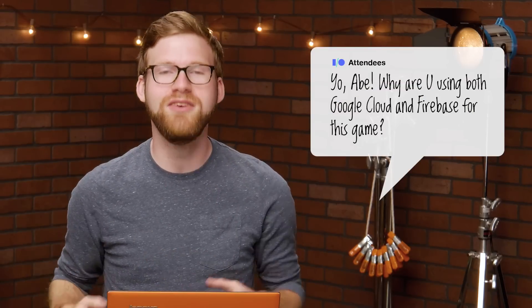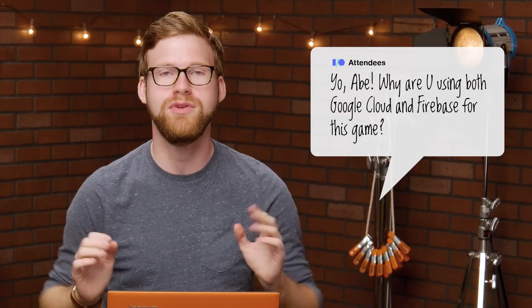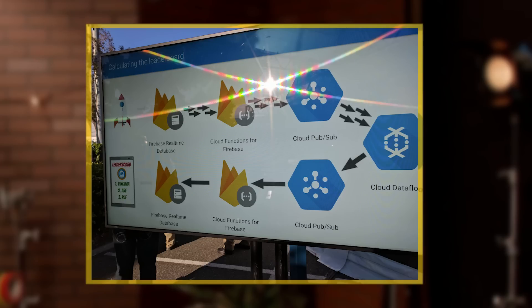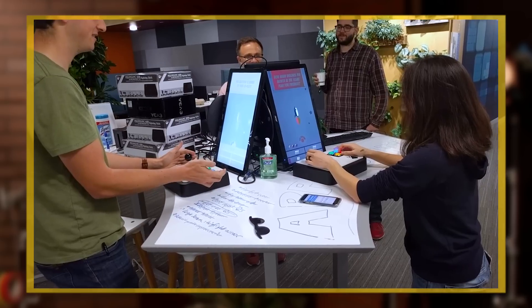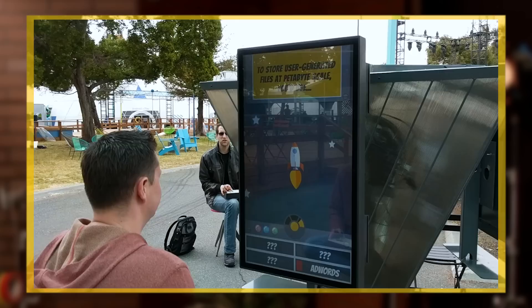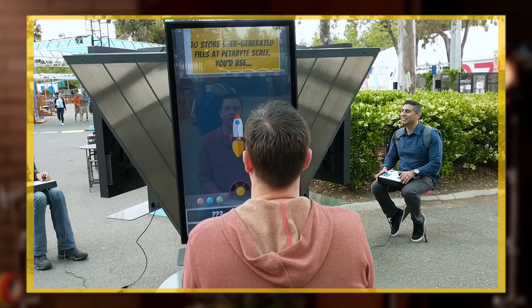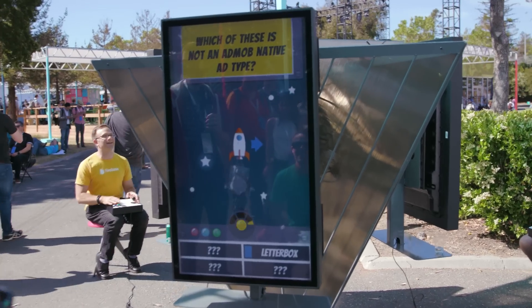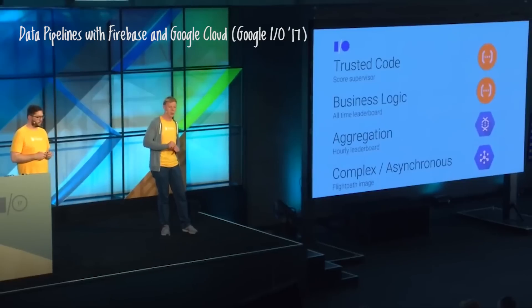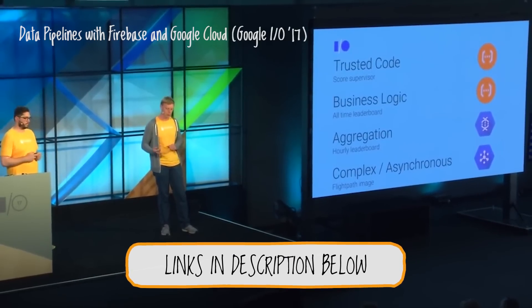Our next question is one about technology. People noticed that we used both Firebase and Google Cloud inside of AppShip 3000, and they wanted to know why we were using both. The answer is simply that they both worked well for different things. The rocket ship game, the leaderboard, and the web companion app were all pure Firebase — cloud messaging, real-time database, storage, all of those Firebase features. But we also needed something on the back end to do the heavy lifting. You might have seen we generate flight maps that show exactly where your rocket went as you played the game. This didn't quite make sense to build on Firebase, so we used a complex data pipeline in Google Cloud to do this. If you want to learn more about how we used the power of Google Cloud in AppShip 3000, you can check out the talk about data pipelines with Firebase and Google Cloud that we've linked below.